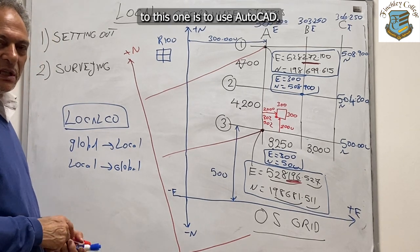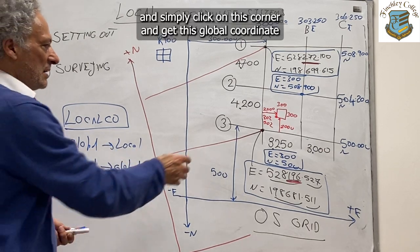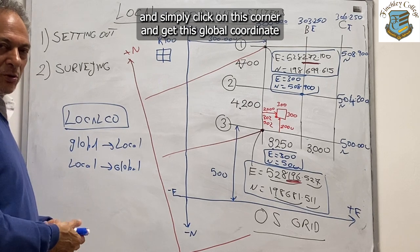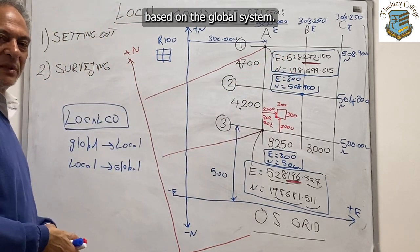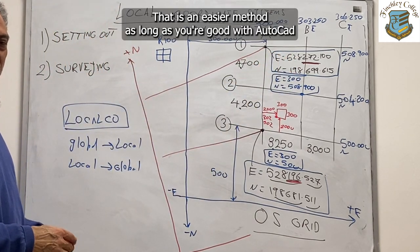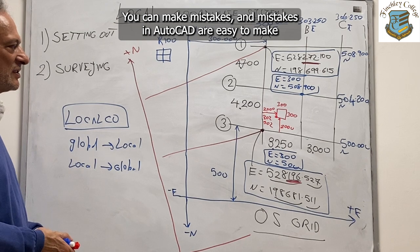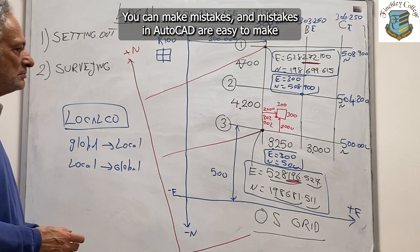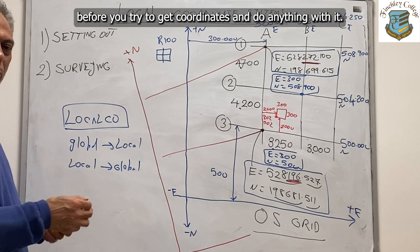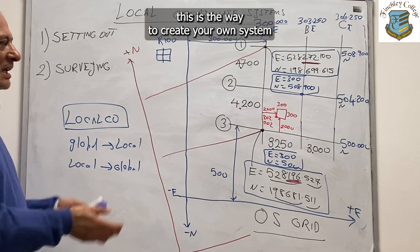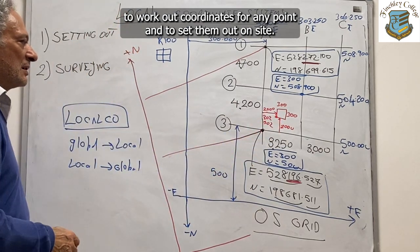An alternative method is to use AutoCAD. You can simply open the drawing in AutoCAD, click on a corner, and get its global coordinate. Then you can do a normal resection based on the global system. That is an easier method as long as you are good with AutoCAD — because if you are not good with AutoCAD, you become dangerous. Mistakes in AutoCAD are easy to make, so you must improve your AutoCAD before trying to get coordinates from it.